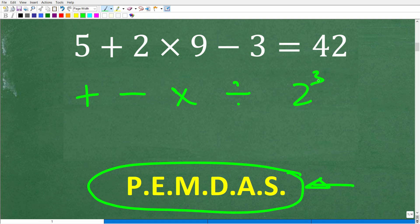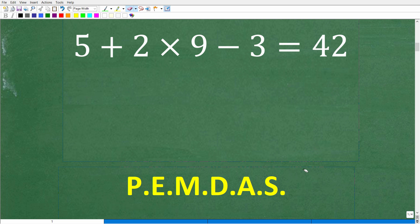When we have a math problem with more than one operation — like here we have addition, multiplication, and subtraction — depending upon the order in which we do this problem, we're going to come up with different answers. Of course, there's only one correct order, and that is when we use the correct order of operations.